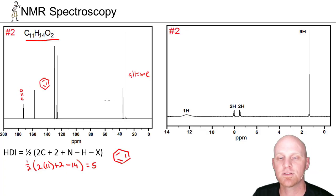So in this case, again, 7 total signals, 2 alkane, 4 aromatic, 1 carbonyl. That's what we're dealing with here.